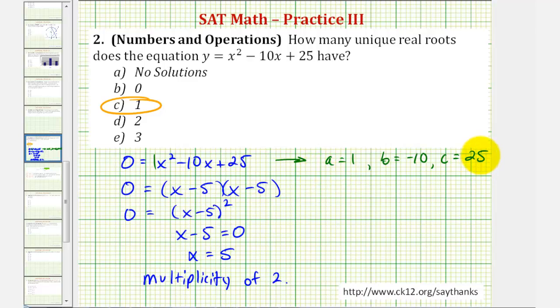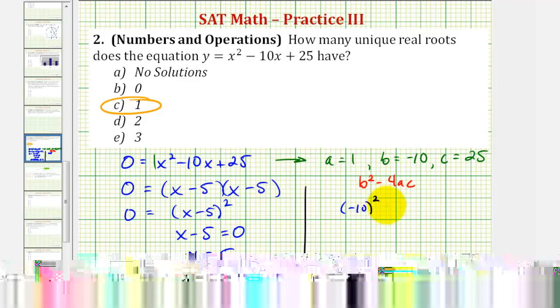We'll use these values of a, b, and c to determine the value of our discriminant, which again is b squared minus 4ac. So we would have negative 10 squared, minus four times a, which is one, times c, which is 25.